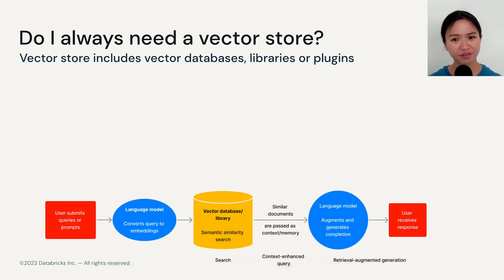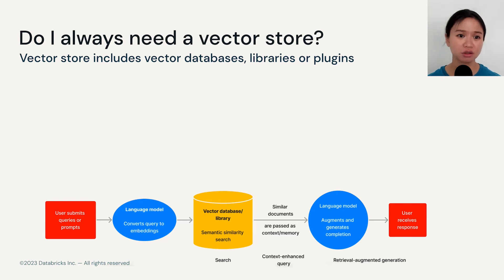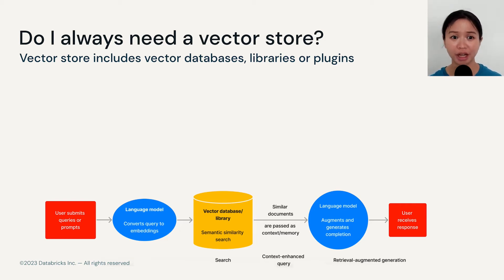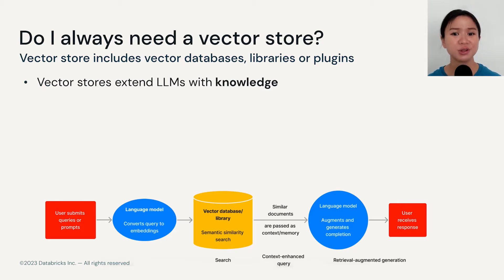In the context of LLMs, whether or not you need a vector store — whether it is a vector database, a library, or a plugin on top of your relational database — it all comes down to: do you need context augmentation?